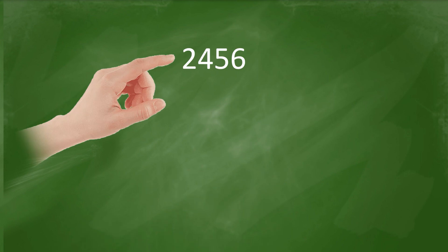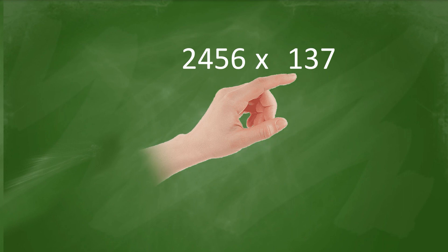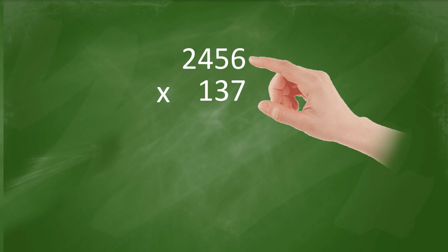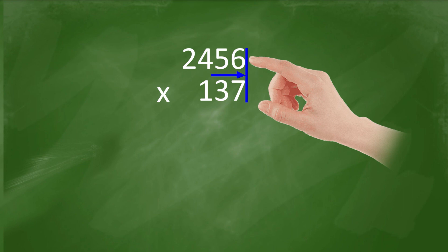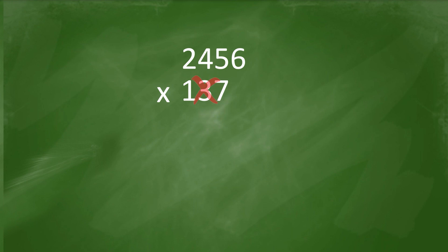Let's try one last example: 2,456 times 137. Again, when you have a problem presented like this, we write it in column form. Always put the number with the most digits on top. Make sure the two given numbers align to the right — not here, not here; it should align from here.